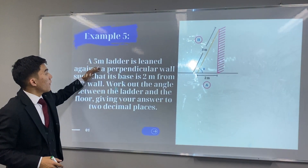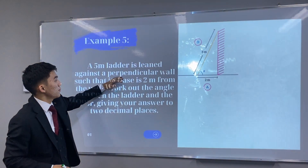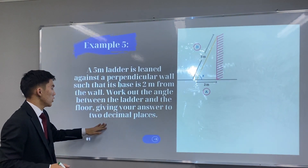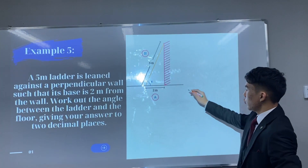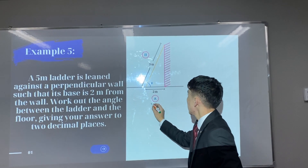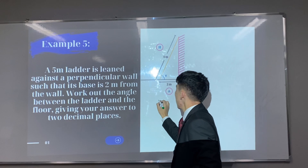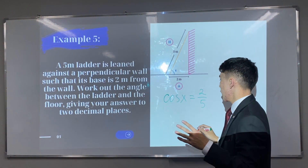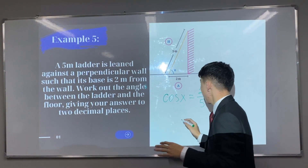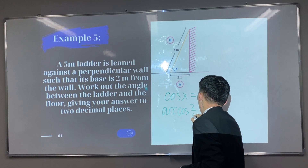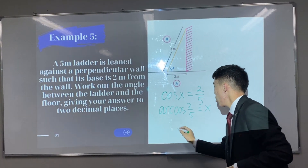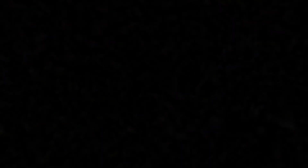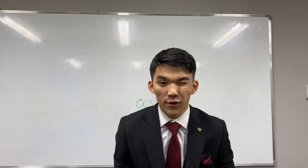For the sixth example, a 5-meter ladder is leaned against a rectangular wall such that its base is 2 meters from the wall. Work out the angle between the ladder and the floor, giving your answer to two decimal places. We have the adjacent side and hypotenuse, so we use cosine: cosine x equals 2/5. Using the inverse cosine function: x equals arccos(2/5), so x equals 66 degrees.